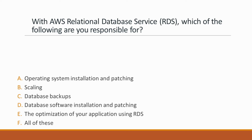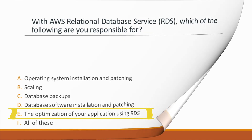Next question: With AWS Relational Database Service (RDS), which of the following are you responsible for? Options: A. OS installation and patching, B. Scaling, C. Database backups, D. Database software installation and patching, E. The optimization of your application using RDS. Correct answer is option E, because you are responsible only for the optimization of your application that uses RDS. AWS will take care of the rest as this is a managed service.